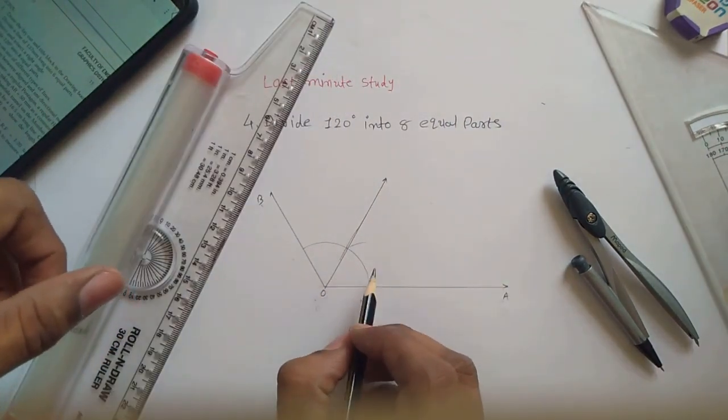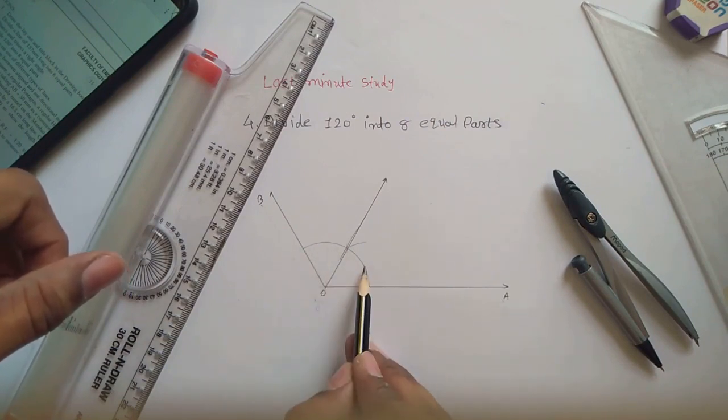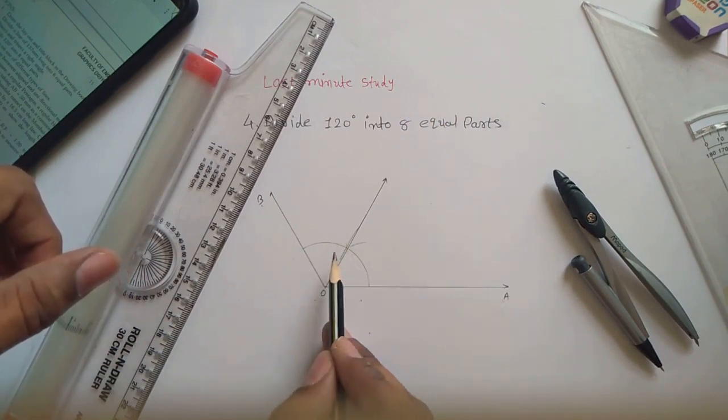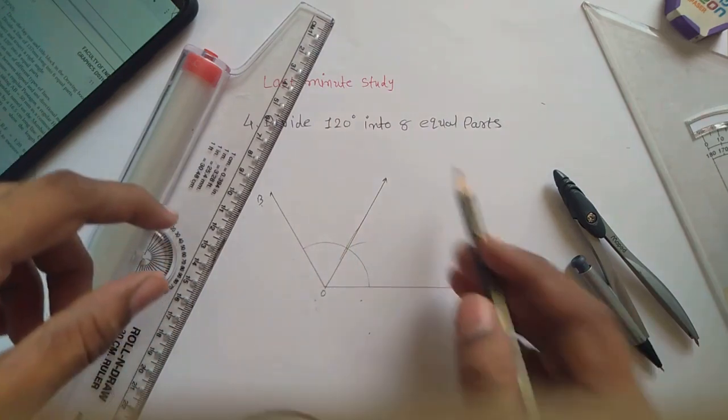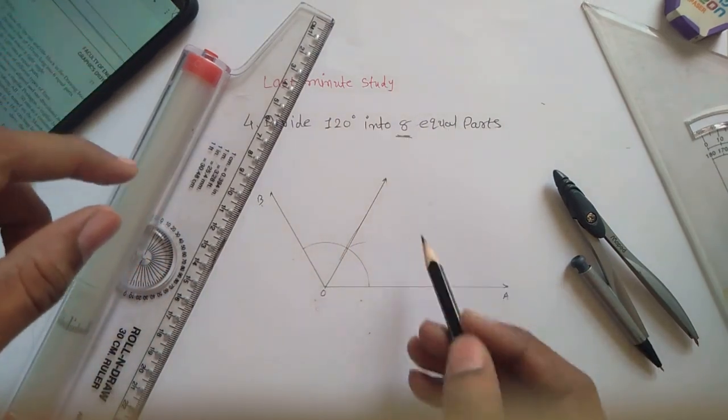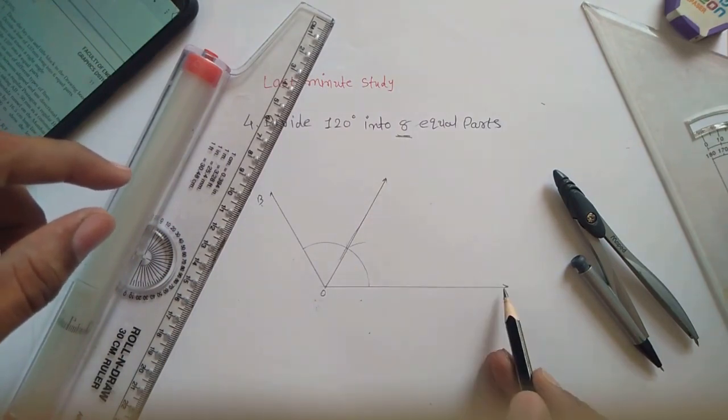In short, we can say that this 120 degrees is divided into two equal parts. This is the first part and this is the second part. Now we need eight equal parts, so for that, consider this 60 degrees individually.